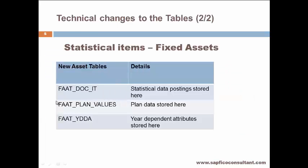Statistical Item Fixed Assets: Various statistical items are now stored in new tables. FAAV underscore DOC underscore IT stores statistical data postings. FAAV underscore PLAN underscore VALUE stores plan data. FAAV underscore YDDA stores year-dependent activities.